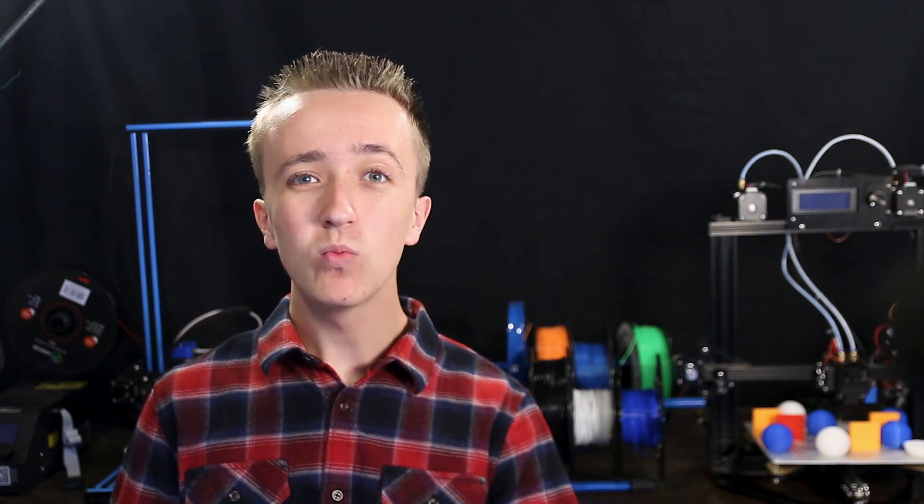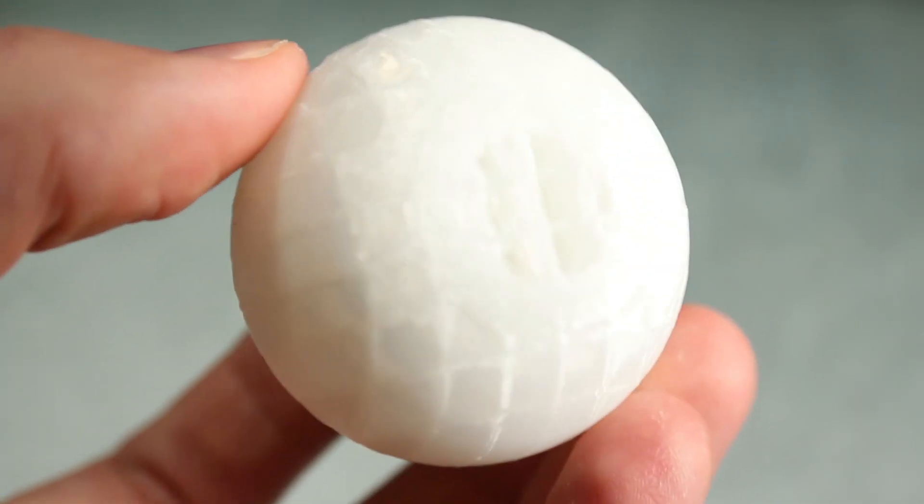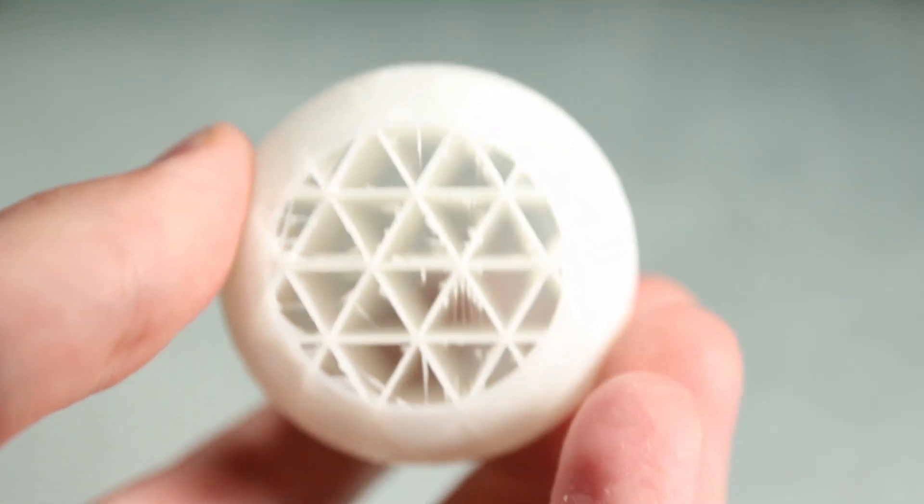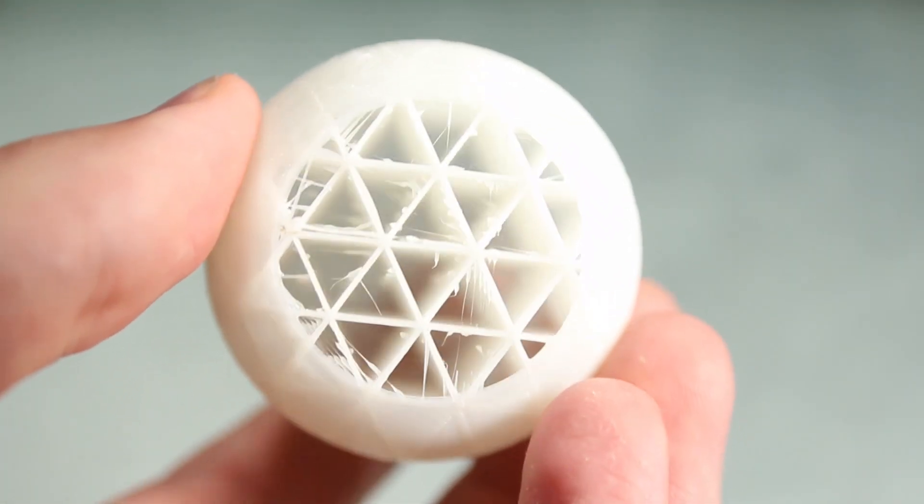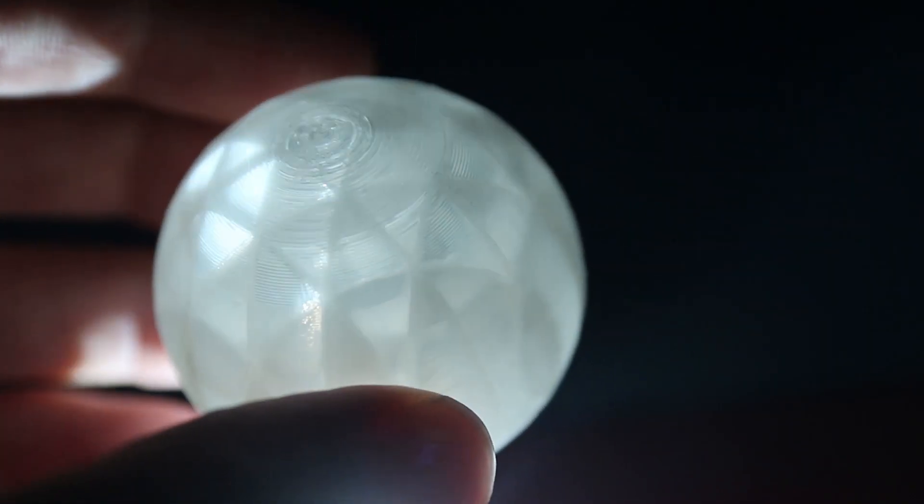It used to be where there were only two options for infill, either a rectangular pattern or a honeycomb pattern. But nowadays there's a plethora of different options and knowing when to use which one can be a really good tool. Now there are two basic different kinds of infill. There's the traditional, where you just have a single shape and then it's just the same thing every layer. And then if you look in it, you can see all the way through to the top.